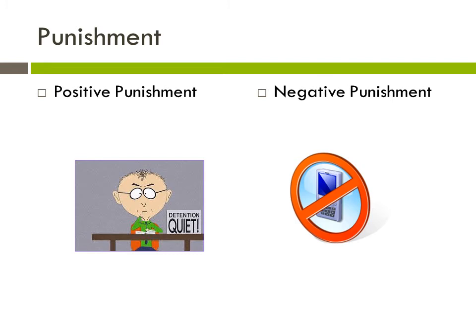Negative punishment is taking something away to decrease behavior. We see this when somebody gets bad grades and at home they lose their TV or phone privileges. Another example is getting caught speeding — you can sometimes lose the ability to drive. To summarize: positive means adding something, negative means taking something away; reinforcement increases behavior and punishment decreases behavior.